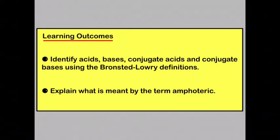So by now you should be able to identify acids, bases, conjugate acids and conjugate bases using the Bronsted-Lowry definitions. And you should also be able to explain what is meant by the term amphoteric.